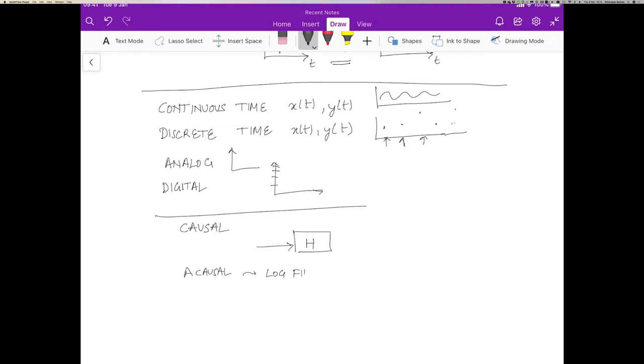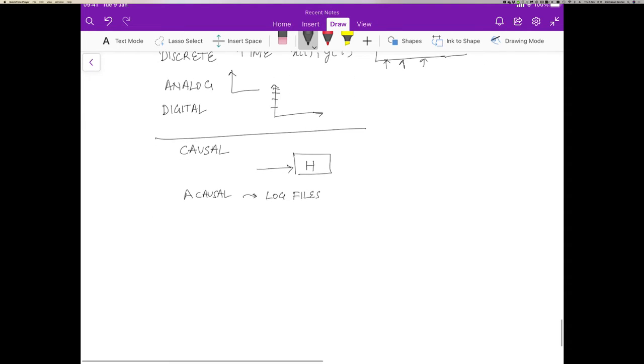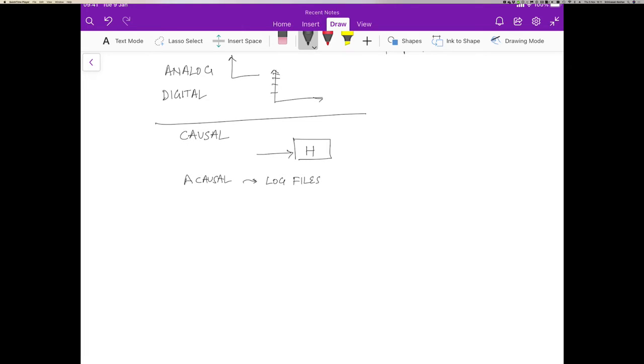You know what the future is going to be. So the system in some sense operates on log files. And so if you have traces you can do that. Now acausal systems are usually useful only as showing lower bounds. That even if you know the future exactly you really can't do better than the acausal system. And so this is usually used to prove lower bounds. It's not something that you can use in practice.